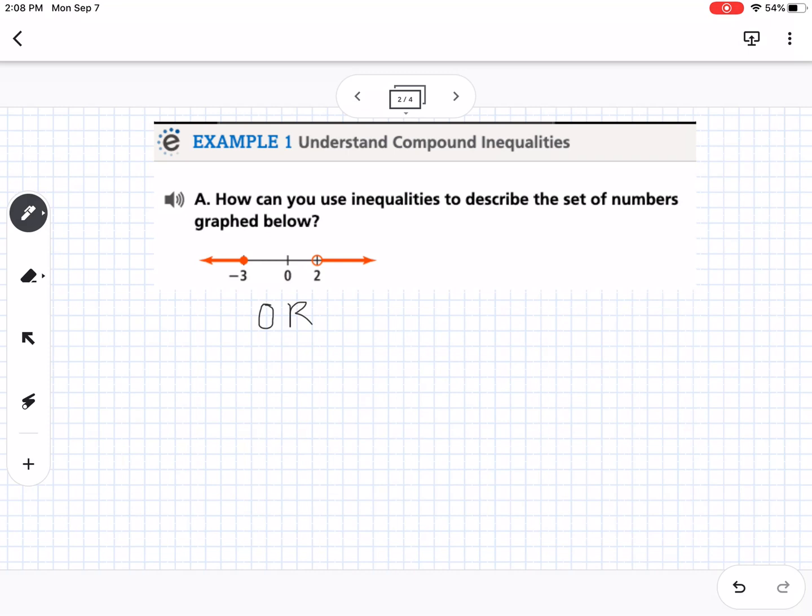So that means we're going to have the word or in it. So we would say x is less than or equal to, because it's a colored in dot right there on negative three. So x is less than or equal to negative three or x is greater than two. So that's how we would write that one.